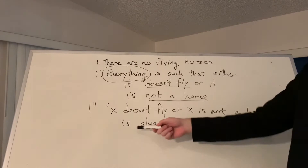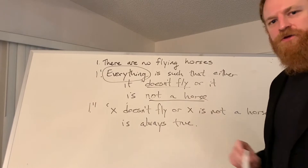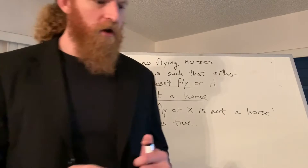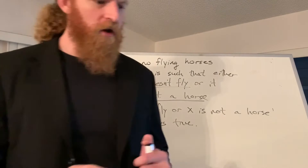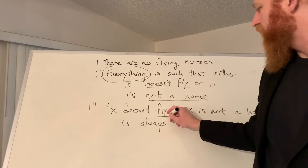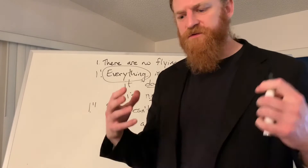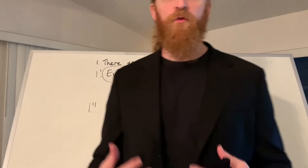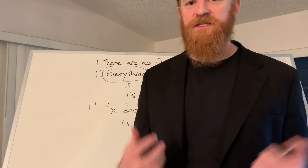Go to any object in the domain, plug it in for X, and you're going to get a true proposition without fail. Notice that nothing in this formulation is in the business of denoting any particular object. We simply have logical vocabulary like negation, and we have properties like flying or being a horse. None of those are the kinds of denoting phrases that Russell is concerned about. Nowhere here have we referred to anything that is a flying horse and said it has the property of non-existence. That's simply not what's going on in the logic of this statement.